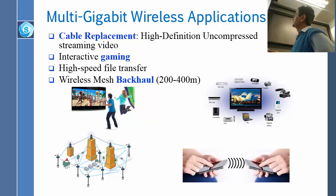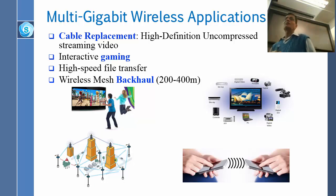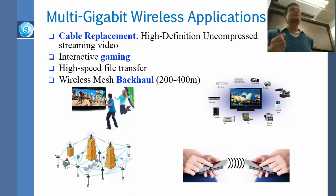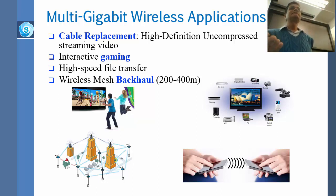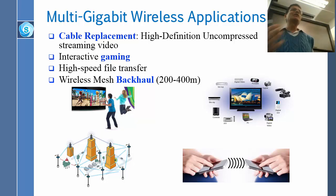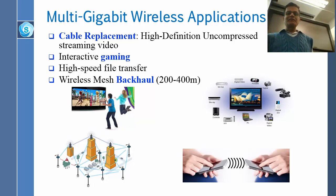It is mostly used for cable replacement for high definition streaming video. Some people ask why you need 7 gigabits per second in your home, and really there are very few applications that need that much. So they came up with high definition uncompressed streaming video.